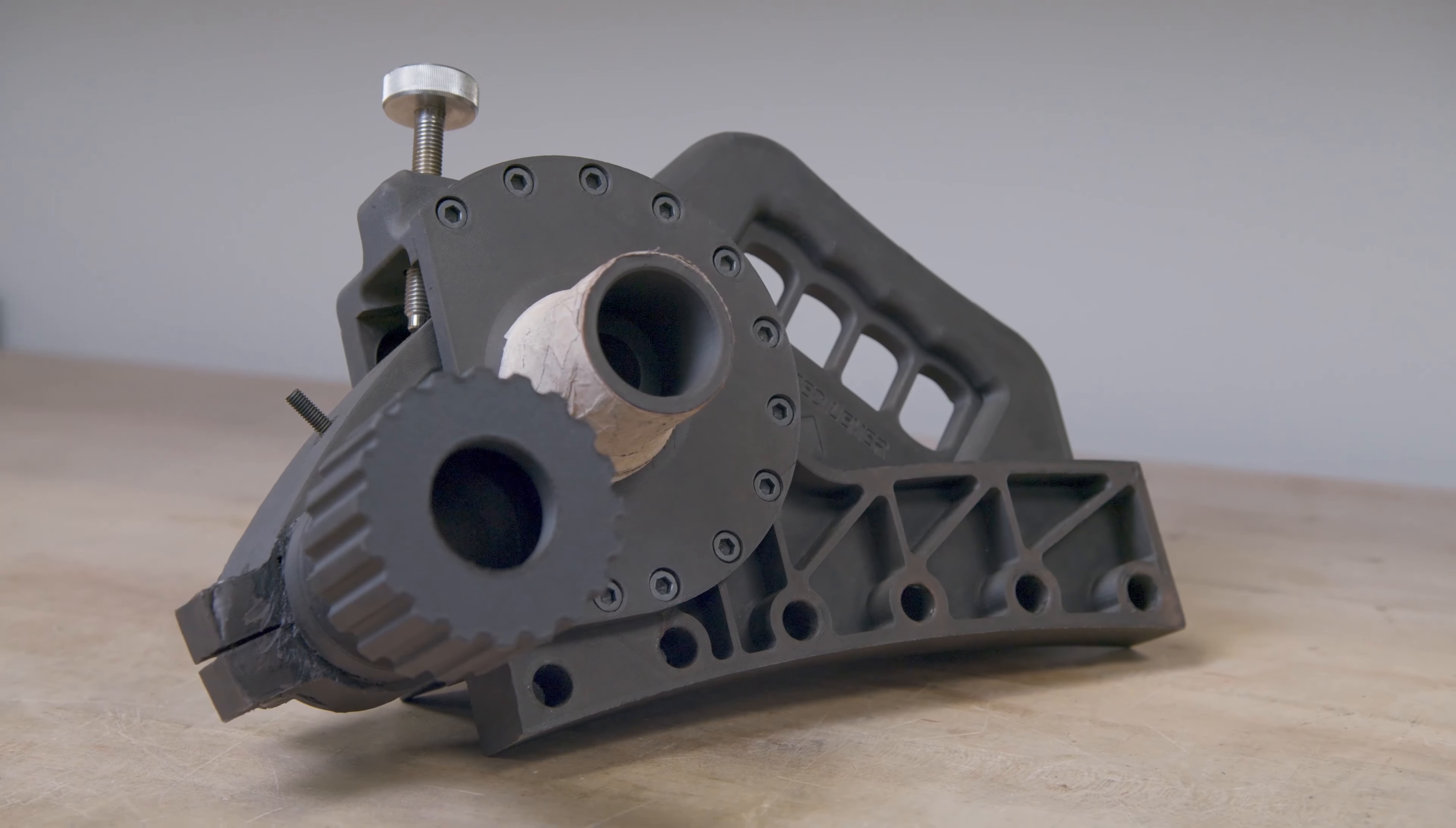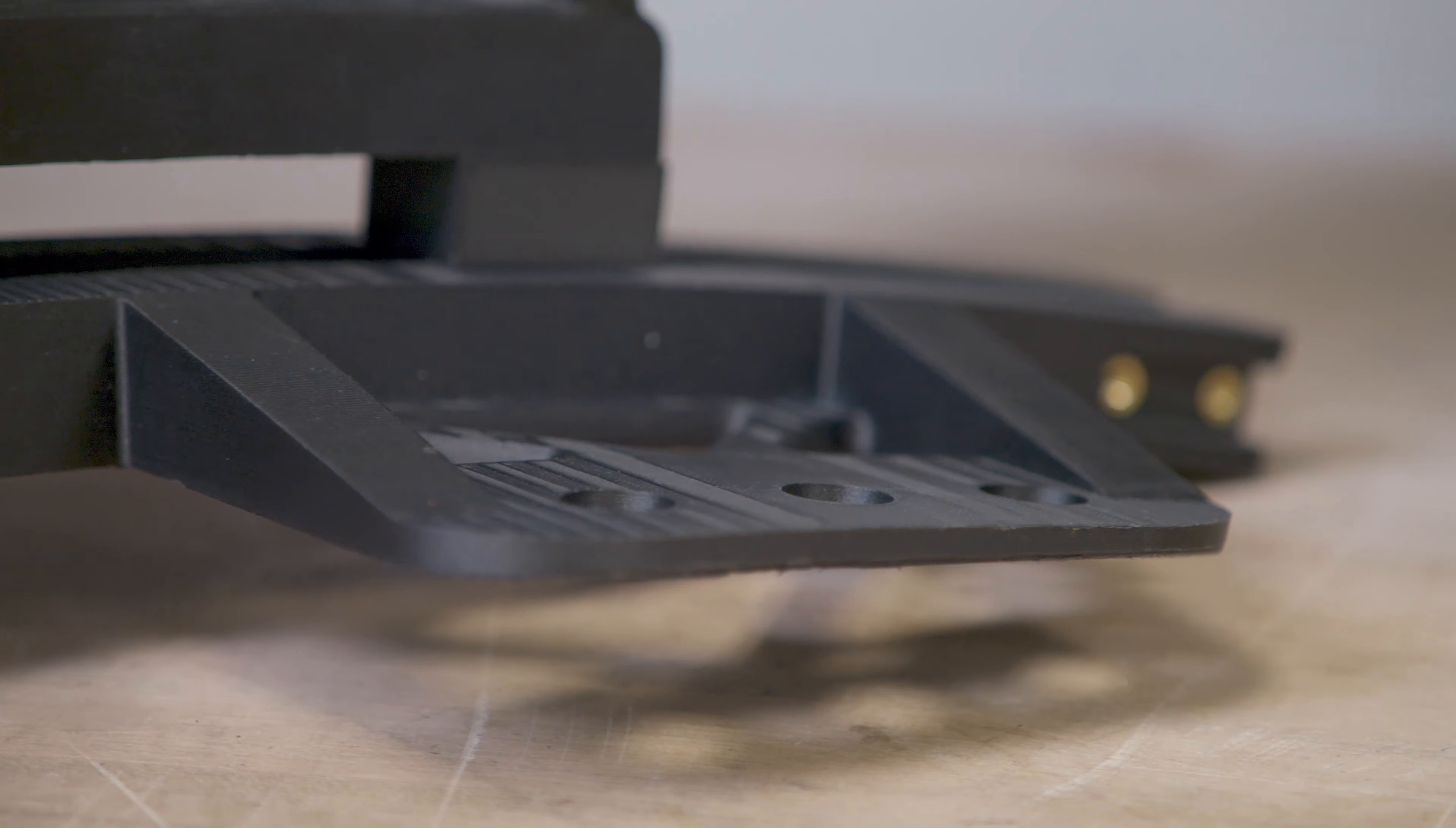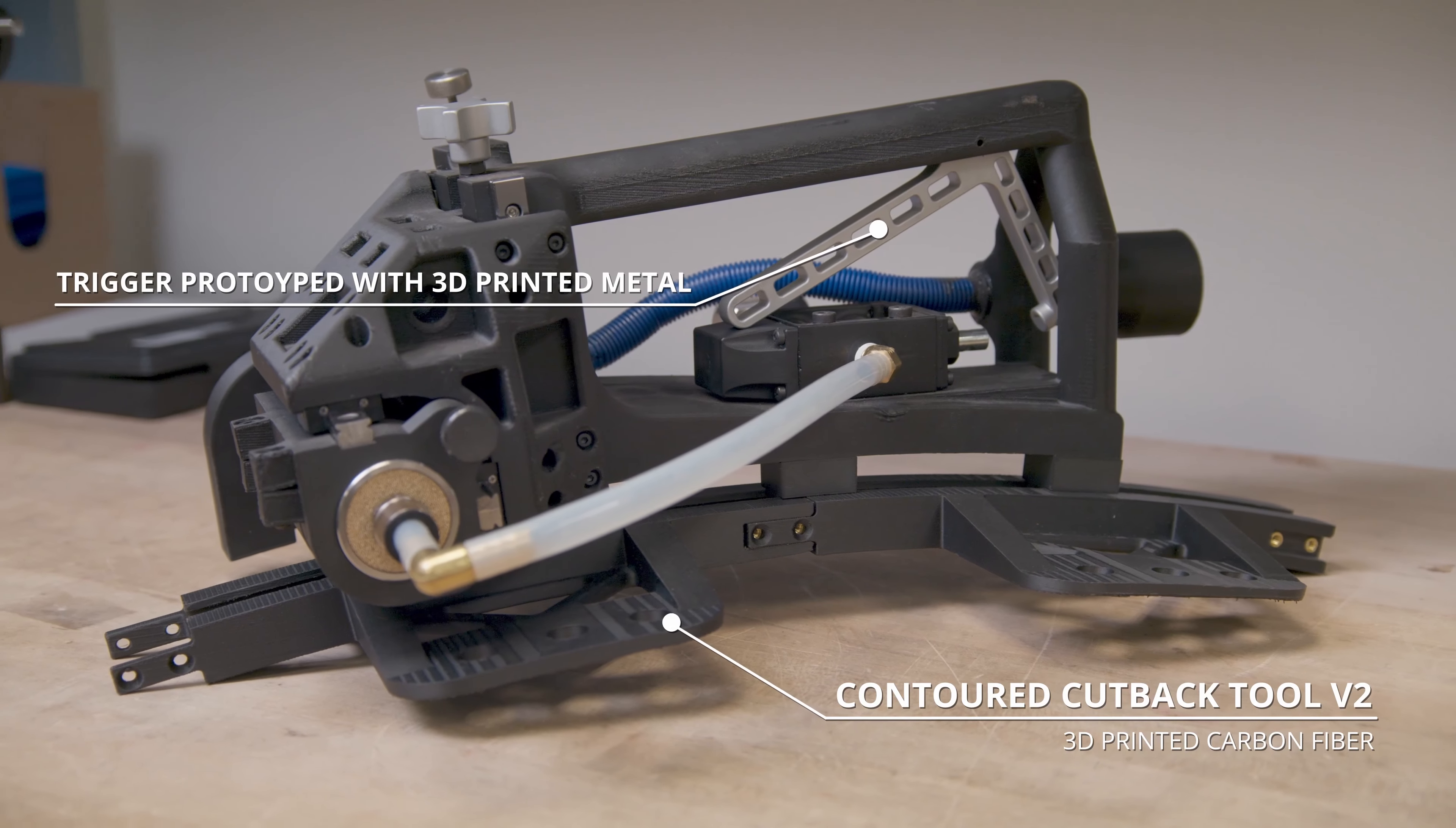This entire contoured cutback tool has been 3D printed. The only off-the-shelf components we had to use were some screws and the actual pneumatic spindle. We were printing this tool as a prototype, but we found that the Markforged carbon fiber composite material is actually robust enough to withstand field use. We developed four kits that are deployed locally.